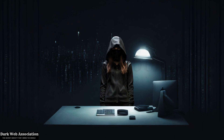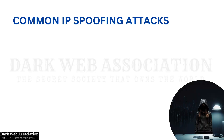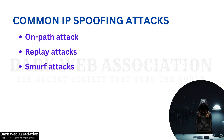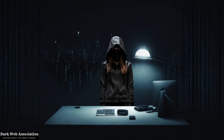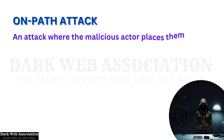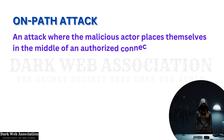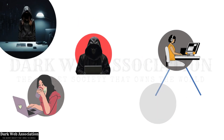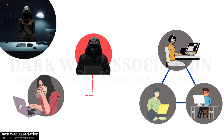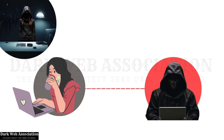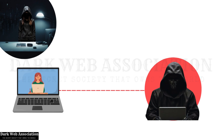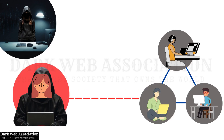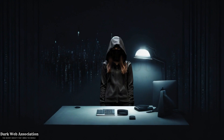Some common IP spoofing attacks are on-path attacks, replay attacks, and smurf attacks. An on-path attack is an attack where the malicious actor places themselves in the middle of an authorized connection and intercepts or alters the data in transit. On-path attackers gain access to the network and put themselves between two devices, like a web browser and a web server. Then they sniff the packet information to learn the IP and MAC addresses of devices that are communicating with each other.